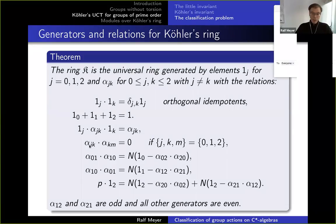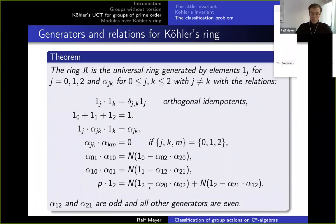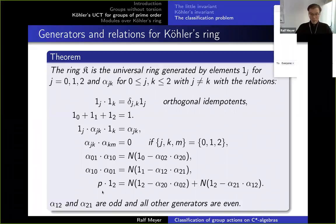The α_{jk}'s are the maps in the two Puppe sequences: one Puppe sequence for the inclusion ℂ into C(G), and the Baaj-Skandalis dual of that. Each gives a six-term exact sequence with three maps, so together they give six maps going around in both directions. The first relation says α_{jk} is a map from the k-th to the j-th piece. The next relation says these alphas form chain complexes: going from m to k and on to j, the product is zero, as should hold in an exact sequence — this holds whenever j, k, m are three different numbers 0, 1, 2.